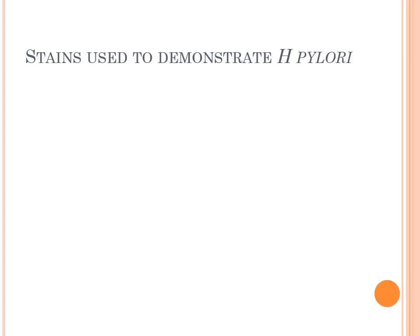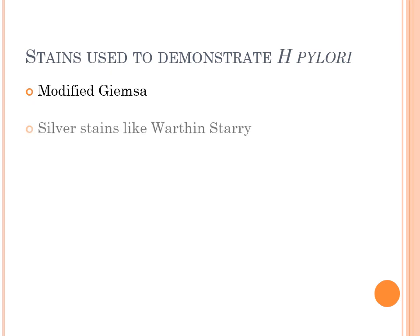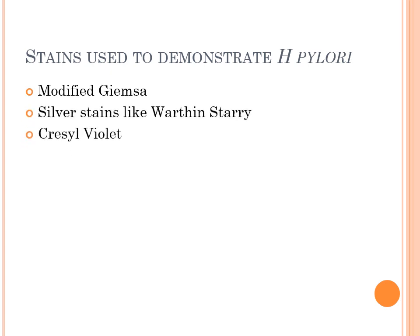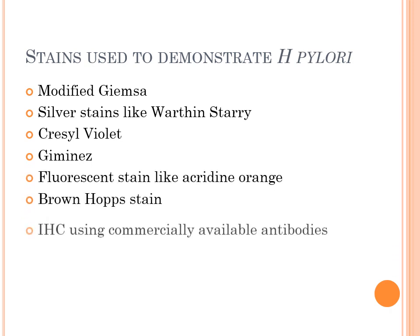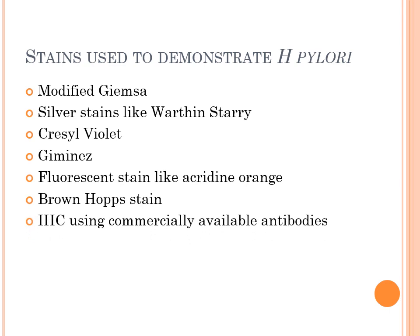The stains used to demonstrate Helicobacter pylori: the commonly used hematoxylin and eosin stain can sometimes demonstrate H. pylori, but other stains used include modified Giemsa, silver stains like Warthin-Starry, cresyl violet, Gimenez stain, fluorescent stains like acridine orange, Brown-Hopps stain, and nowadays even immunohistochemistry using commercially available antibodies.